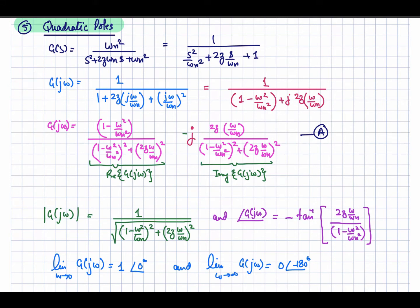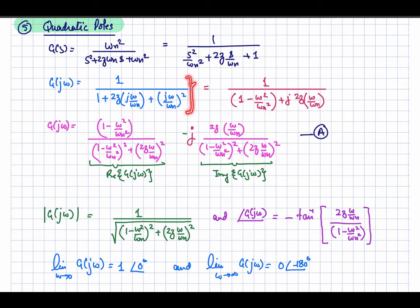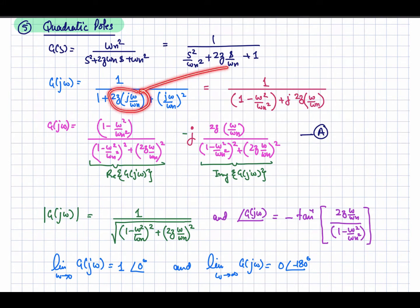To get the sinusoidal transfer function we replace s with j*omega. This transfer function can then be written with s replaced by j*omega. Simplifying into real and imaginary parts, the real part is 1 minus omega squared divided by omega_n squared.